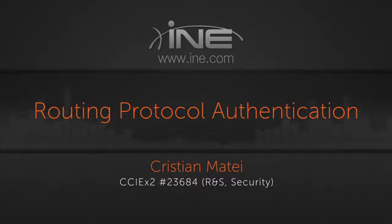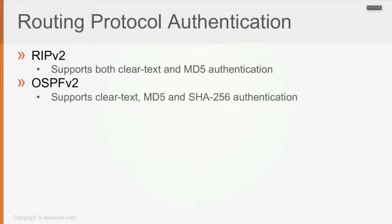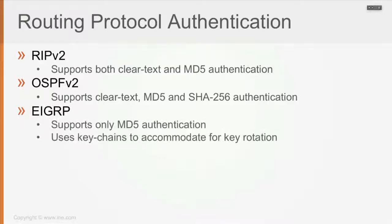Now running protocol authentication. The most commonly used protocols: RIP version 2 supports both clear text and MD5 authentication. OSPF version 2 supports clear text, MD5, and in the newest code SHA-256 authentication. EIGRP supports only MD5 authentication and makes use of key chains to accommodate easy key rotation.